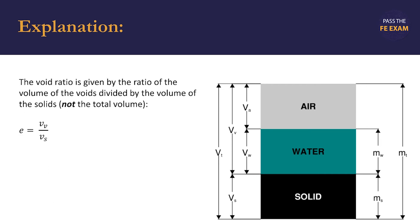Now we have to be careful here. The void ratio is given by the ratio of the volume of the voids divided by the volume of the solids, not the total volume of the soil sample.